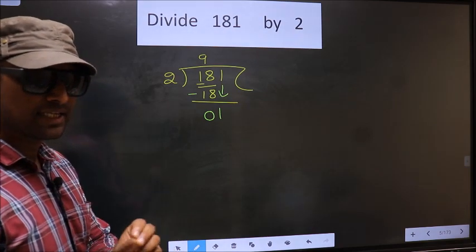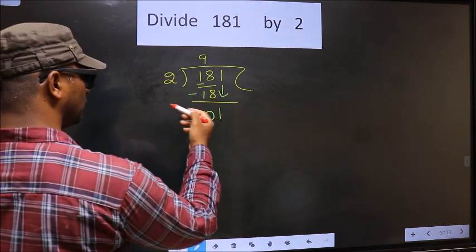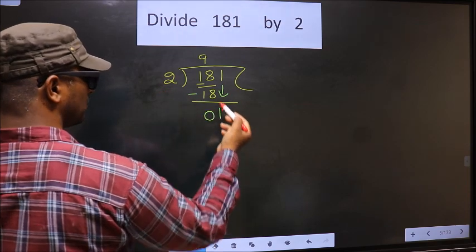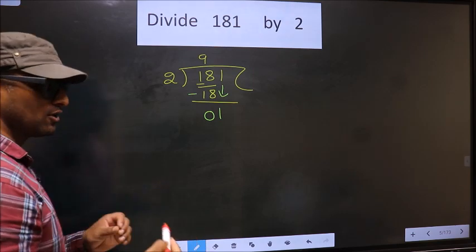And the mistake is this 1. Here we have 1. Here 2. 1 is smaller than 2. So what many do is, they put a dot and take 0 here. Which is wrong.